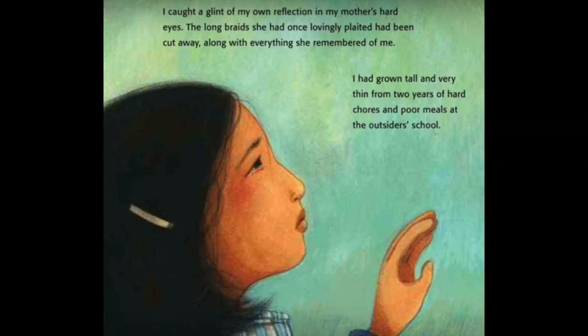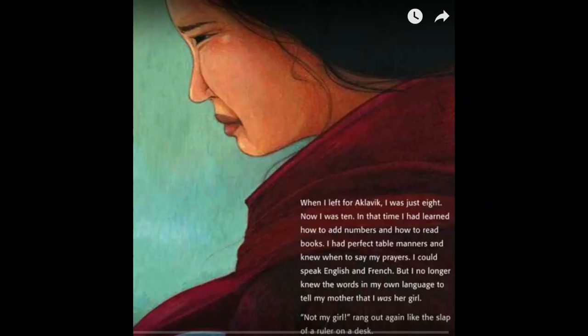I had grown tall and very thin from two years of hard chores and poor meals at the outsider school. In that time, I had learned how to add numbers and how to read books. I had perfect table manners, and I knew when to say my prayers. I could speak English and French, but I no longer knew the words in my own language to tell my mother that I was her girl. 'Not my girl' rang out again like the slap of a ruler on a desk.